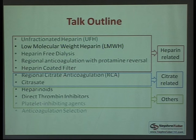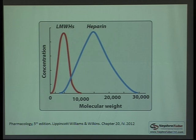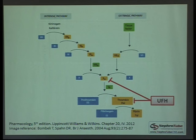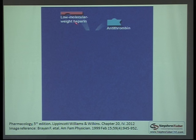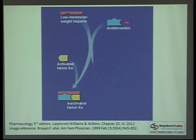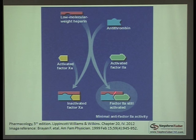The second heparin-related anticoagulation method is low molecular weight heparin (LMWH), derived from unfractionated heparin by enzymatic degradation, with molecular weight of 4,000–8,000. Its site of action is mainly inhibition of activated factor Xa with slight antithrombin effect. Because its chain length is small, it can inactivate factor Xa but cannot completely inactivate thrombin, giving it good anti-factor Xa activity but minimal anti-factor IIa activity.